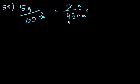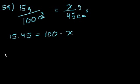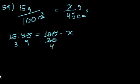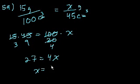Let's cross multiply. We could say 15 times 45 is equal to 100 times x. To make the math easy, let's divide both sides by 5, so this becomes 20 and this becomes 9. We could divide both sides by 5 again, then this becomes 4 and this becomes 3. Now the numbers are easy to deal with. 3 times 9 is 27 is equal to 4x.